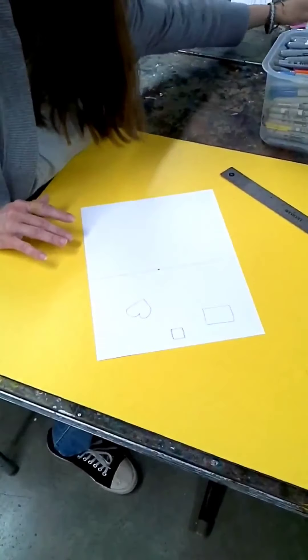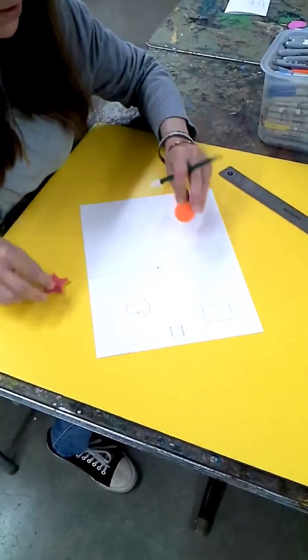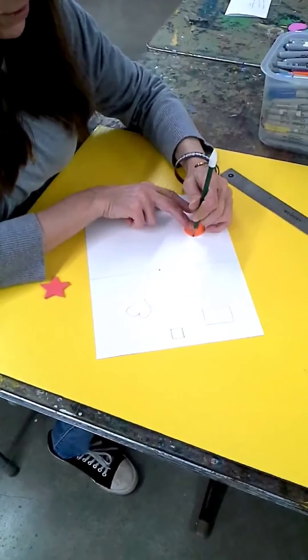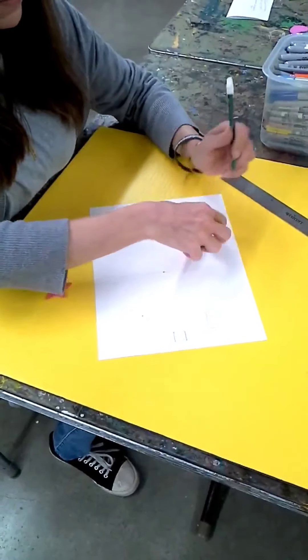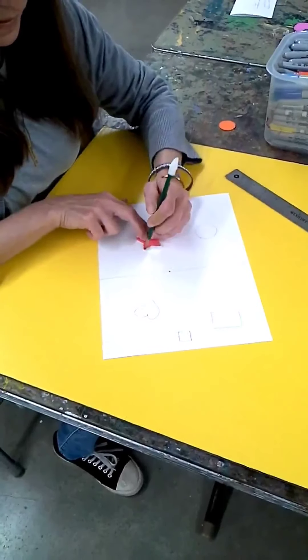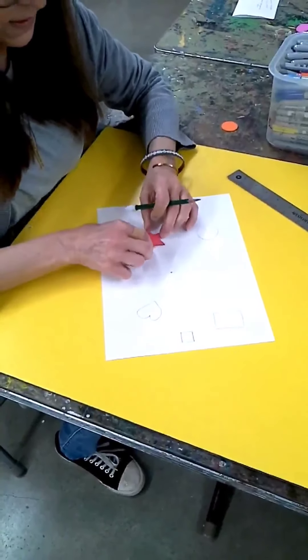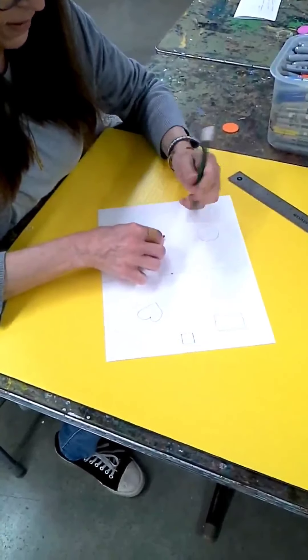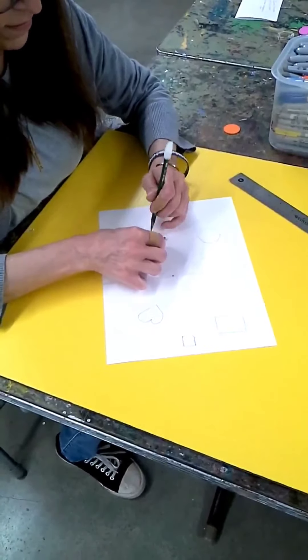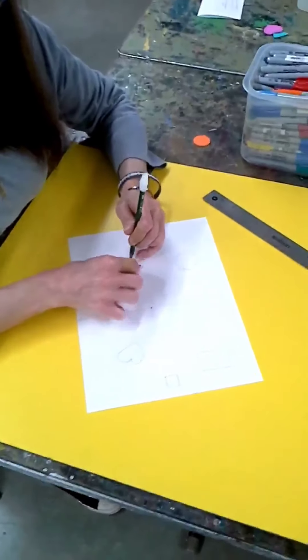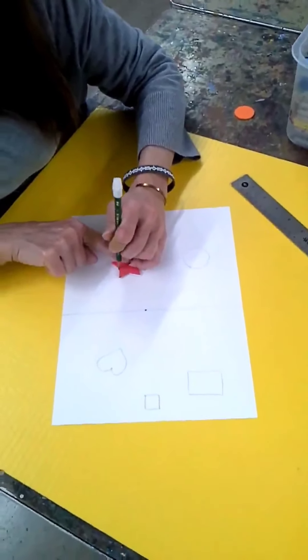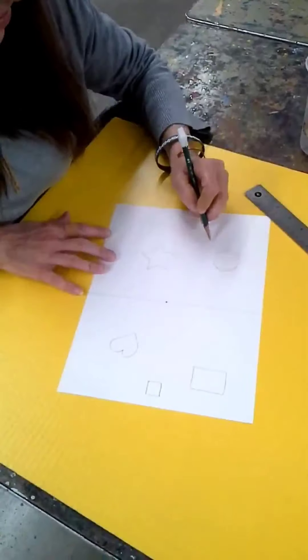I also have some other little shapes. If you don't feel comfortable drawing freehand, you can use those. Trace around. The star is going to be kind of tricky drawing. So if you have something you want to trace, you can do that. Some odd shapes.